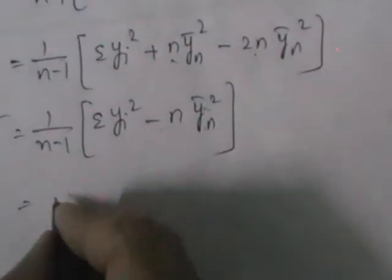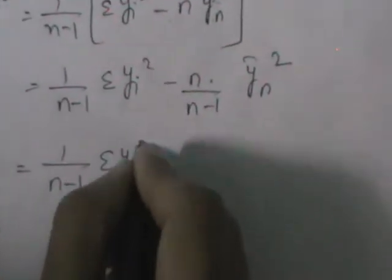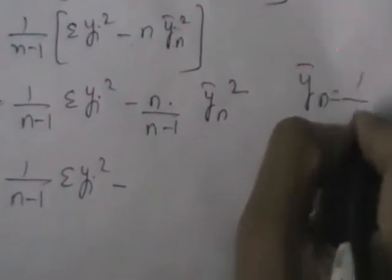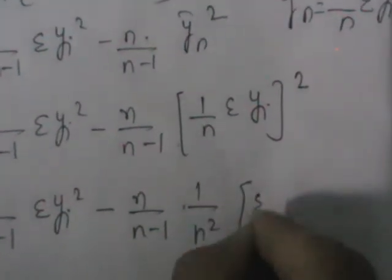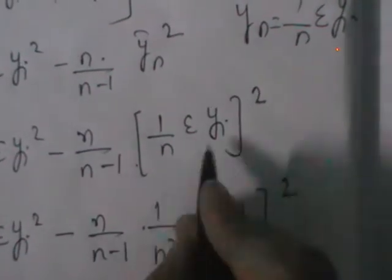Now let us take 1 by n minus 1 into each term. We replace ȳ_n with 1 by n·sigma y_i, so y_bar_n squared becomes (1 by n·sigma y_i)² which equals 1 by n² times (sigma y_i)². This gives 1 by n minus 1·sigma y_i² minus n by n minus 1 times 1 by n² times (sigma y_i)², which simplifies to 1 by n minus 1·sigma y_i² minus 1 by n(n minus 1) times (sigma y_i)².